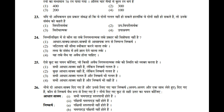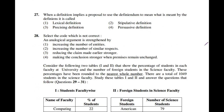Question number 27: When a definition implies a proposal to use the definiendum to mean what is meant by the definiens, it is called a stipulative definition. The correct option identifies this type of definition.